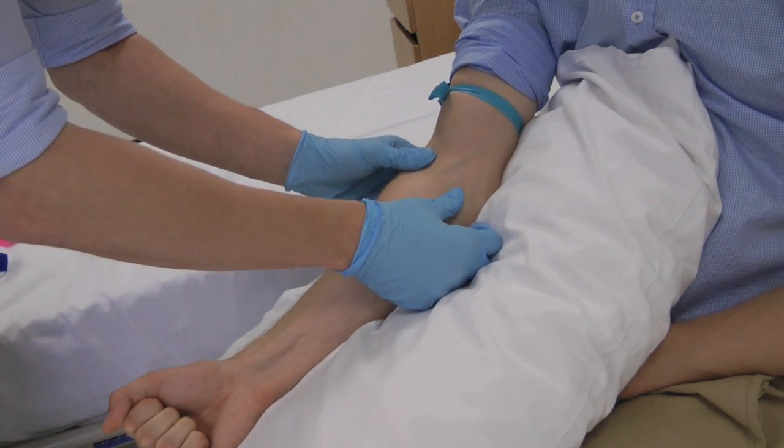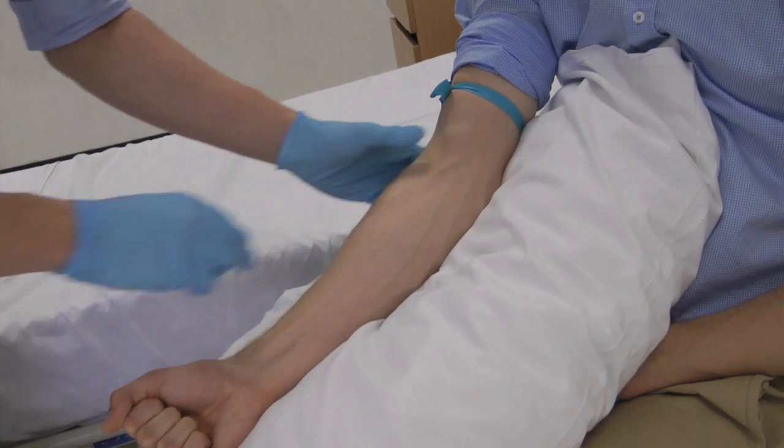The anterior cubital fossa provides access to the basilic, cephalic and median cubital veins.